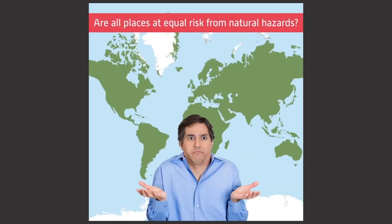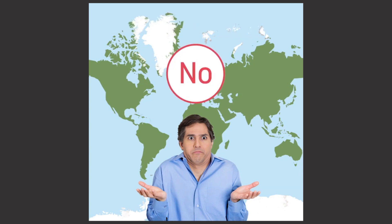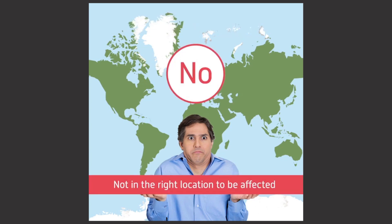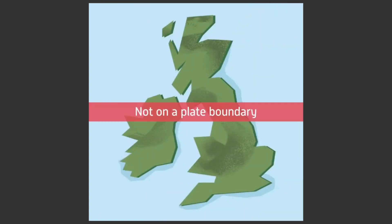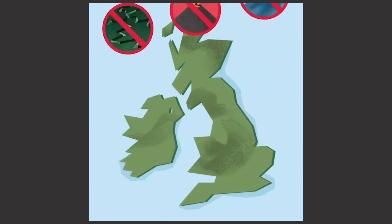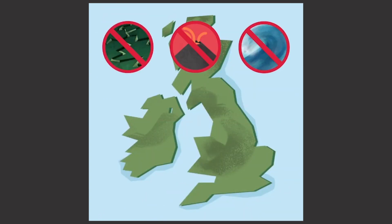Are all places at equal risk from natural hazards? Quite simply, no. Some countries are not in the right location to be affected by hazards. For example, the UK is not on a plate boundary, so there are no earthquakes, volcanoes, or tsunamis. It never has the right weather or seawater conditions to trigger hurricanes.